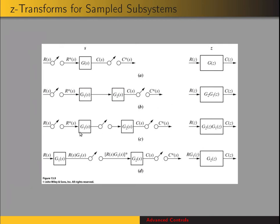The next scenario is if we have subsystem G1 with sampled input and sampled output, which goes to subsystem G2 as sampled input. We want to find the Z-transform of these two subsystems. In this case, we have to take the product of the Z-transforms of each subsystem: G2 of Z times G1 of Z. That's different from the previous case where we took the Z-transform of the products — here we take the Z-transforms first and then multiply them.